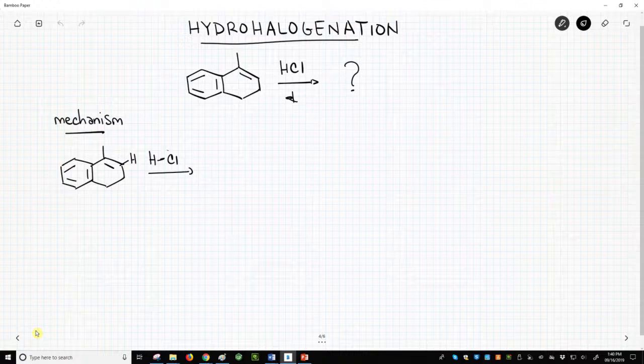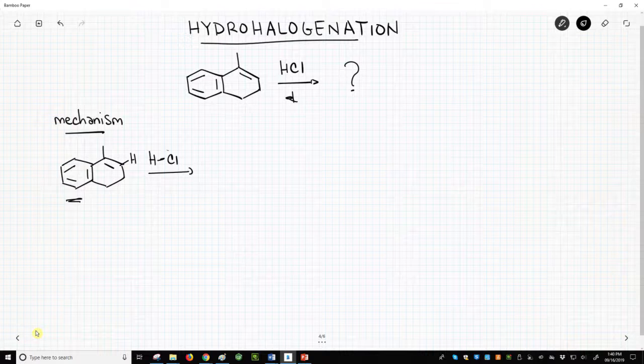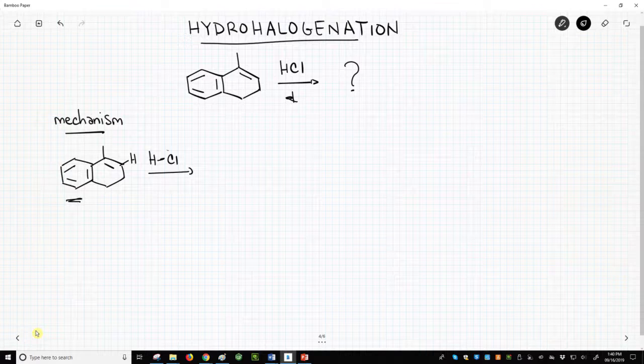These reactions start with protonation of an alkene. We have lots of alkenes on the left side of the molecule, but the three on the left are part of a benzene ring and are very stable. We'll react with this one in the upper right.